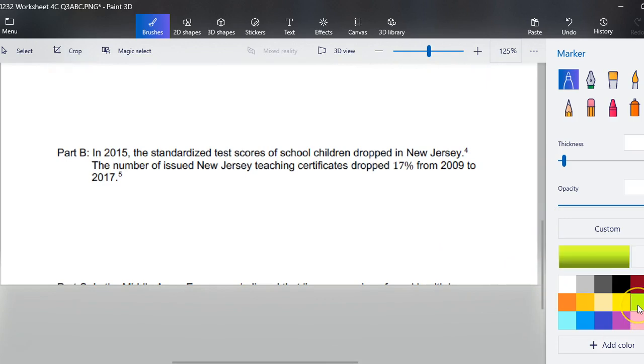Part B. In 2015 the standardized test scores of school children dropped in New Jersey. The number of issued New Jersey teaching certificates dropped 17% from 2009 to 2017. Do you think this warrants further investigation or further study? It might, since there are fewer teaching certificates, it could indicate fewer teachers and hence an increase in class size which itself could warrant poor performance. But it did turn out that the reason that the standardized test scores dropped was because of the implementation of a new standardized testing system related to the core curriculum and not because there were fewer teachers.